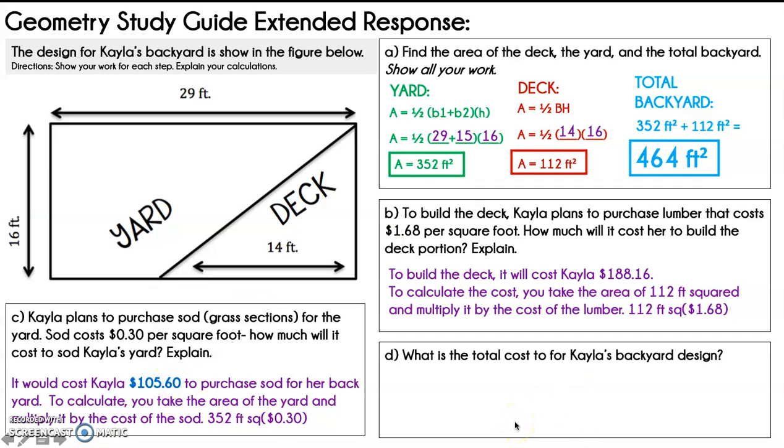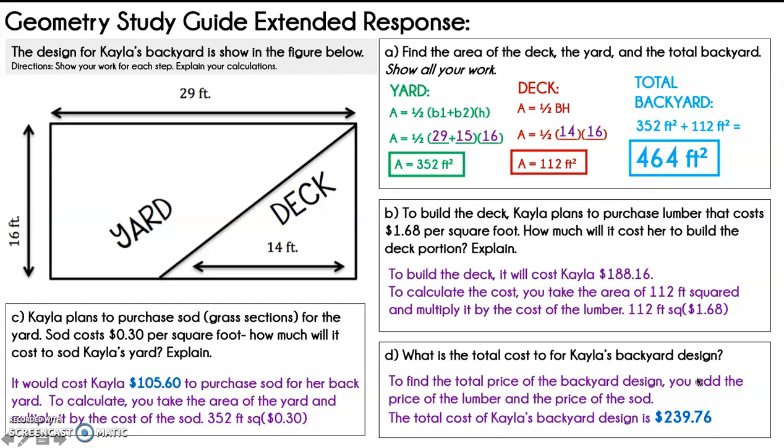Then part D says, what is the total cost for Kayla's backyard design? So it says, to find the total price, I'm going to restate, to find the total price of the backyard design, you're going to add the price of the lumber plus the price of the sod. So the total cost of Kayla's backyard design is $239.76. So I just took the $105 for sod plus $188.16 for the lumber and added them together to get a total price of $239.76.